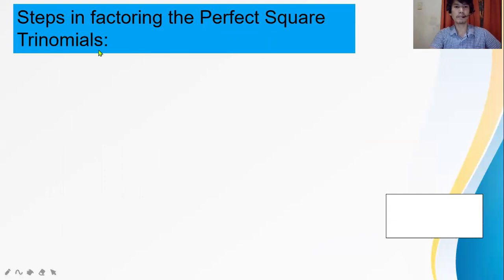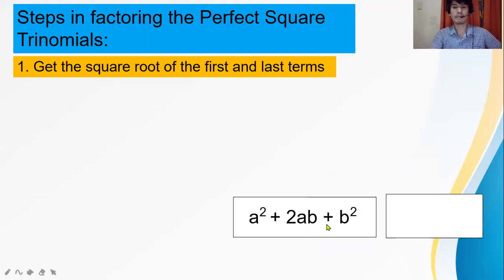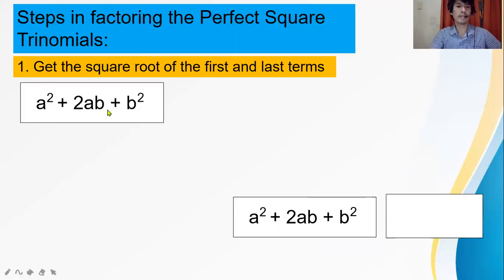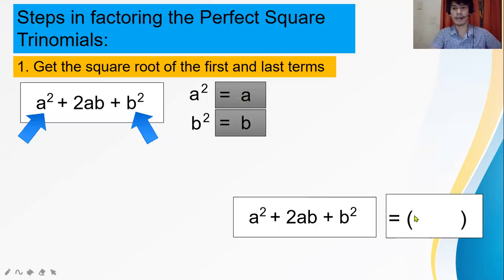Steps in factoring perfect square trinomials. Step 1: get the square root of the first and last term. For a squared plus 2ab plus b squared, the first and last terms are perfect squares — a squared and b squared. The square root of a squared is a, and the square root of b squared is b. So we have a and b.